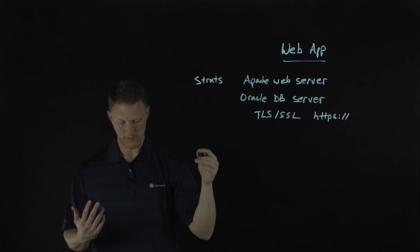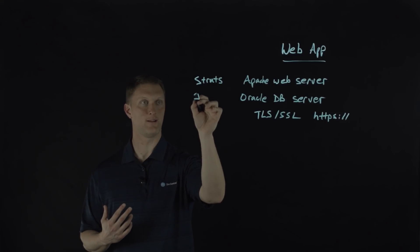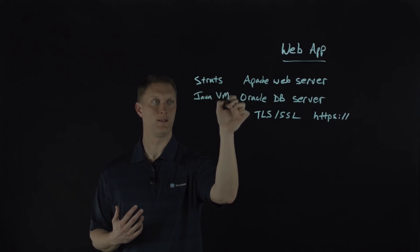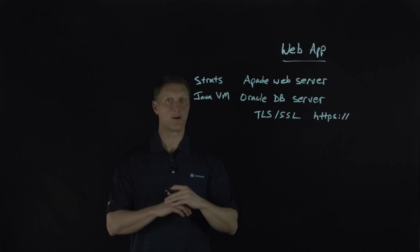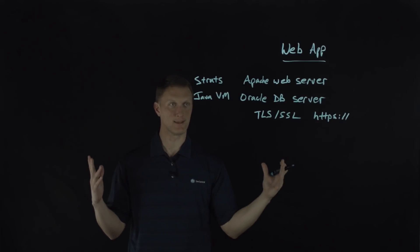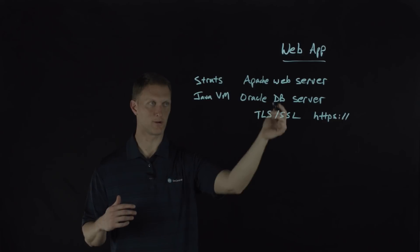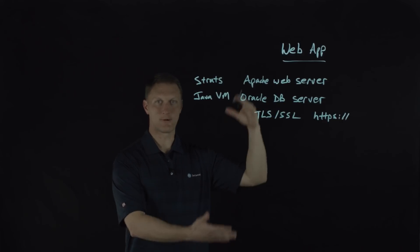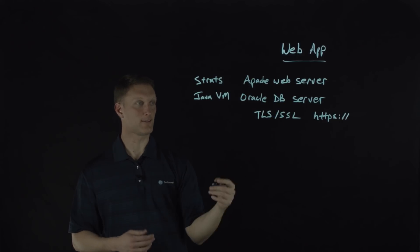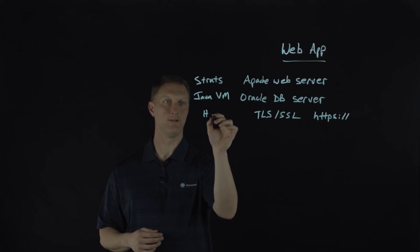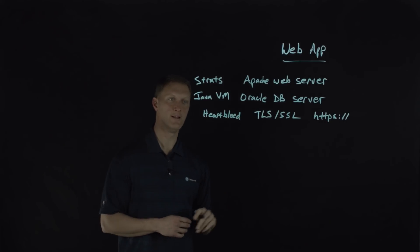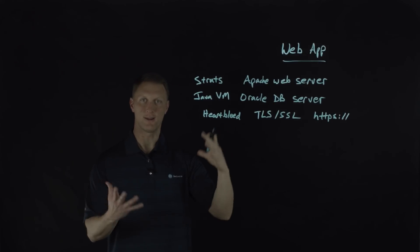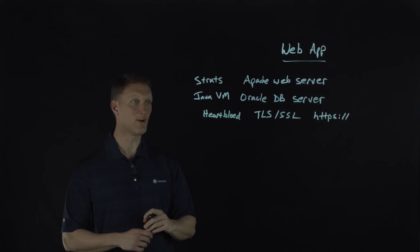Another one — say for Oracle — there's a Java VM Oracle database server known vulnerability out there. And by the way, there are many, many known vulnerabilities that I could list here, unique to Apache or Oracle or any number of components. For TLS/SSL, there's a pretty common one from back in April of 2014 called Heartbleed. If you did not configure your TLS/SSL configuration correctly, you may be vulnerable to what's called Heartbleed.